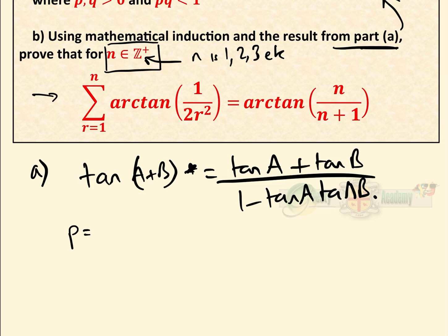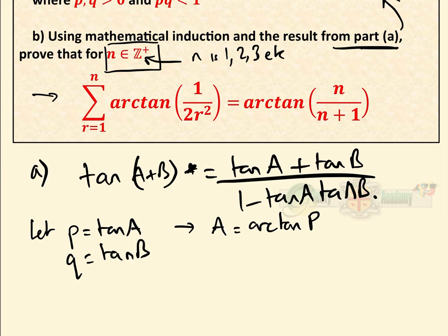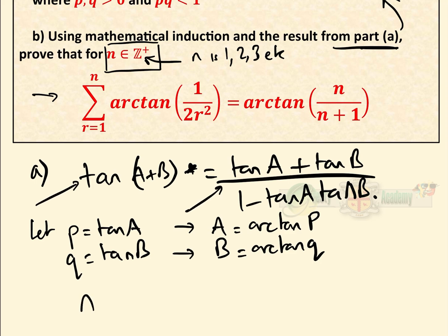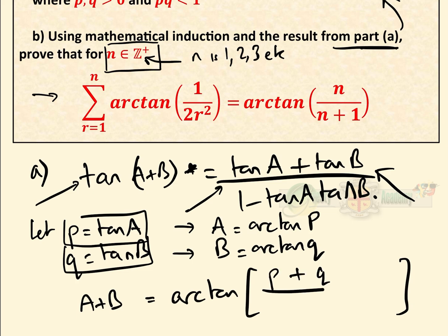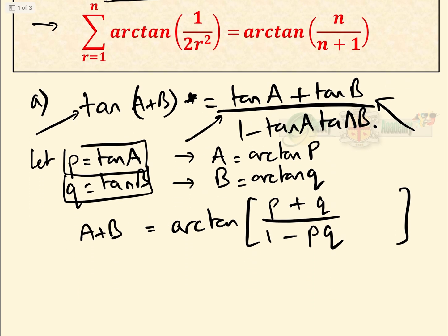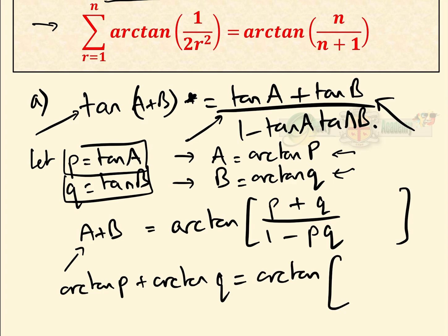Now, we let P equal tan A and Q equal tan B. Therefore A is equal to arctan P by definition, and B is equal to arctan Q by definition. We arctan both sides — arctan of tan is just A plus B — so A plus B equals arctan of P plus Q over 1 minus PQ. We replace A and B by arctan P and arctan Q, giving us arctan P plus arctan Q equals arctan of P plus Q over 1 minus PQ, as required. That is part A.